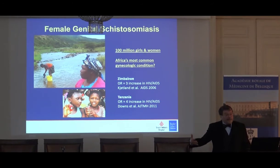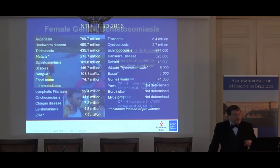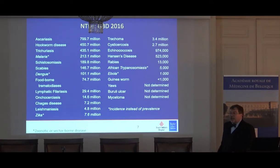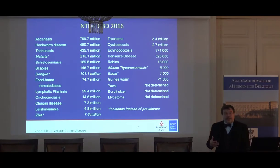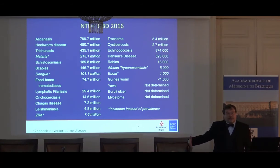The World Health Organization has expanded that list from our original 13-14 to now 20 conditions. Just to appreciate the scale: 799 million infections, 450 million people with hookworm, whipworm, schistosomiasis, scabies, Chagas disease, and more. The key point is that every single person who lives in extreme poverty has at least one of these neglected tropical diseases.